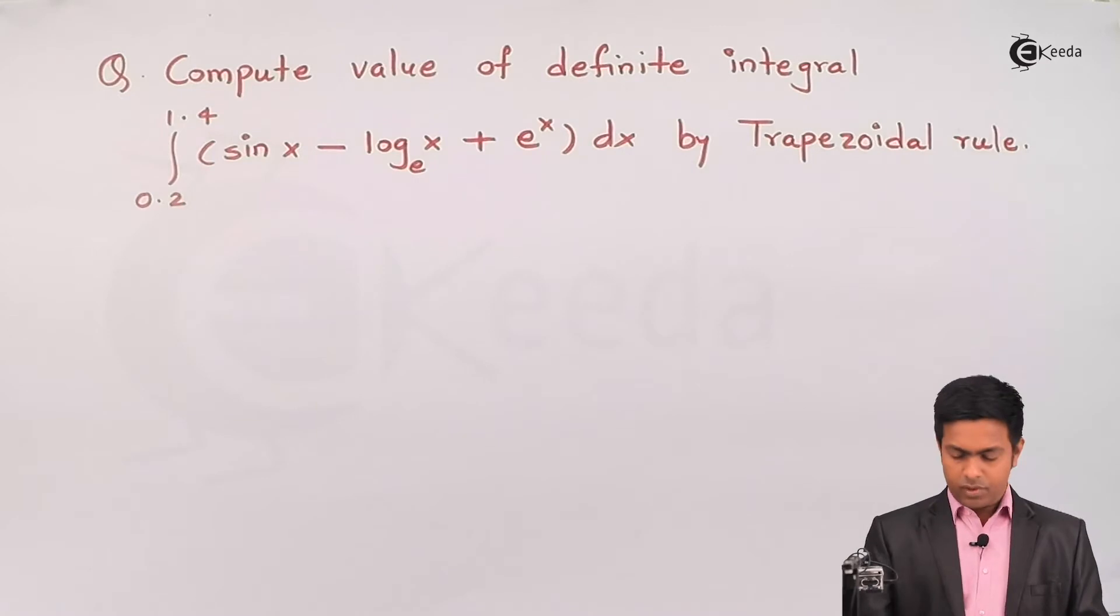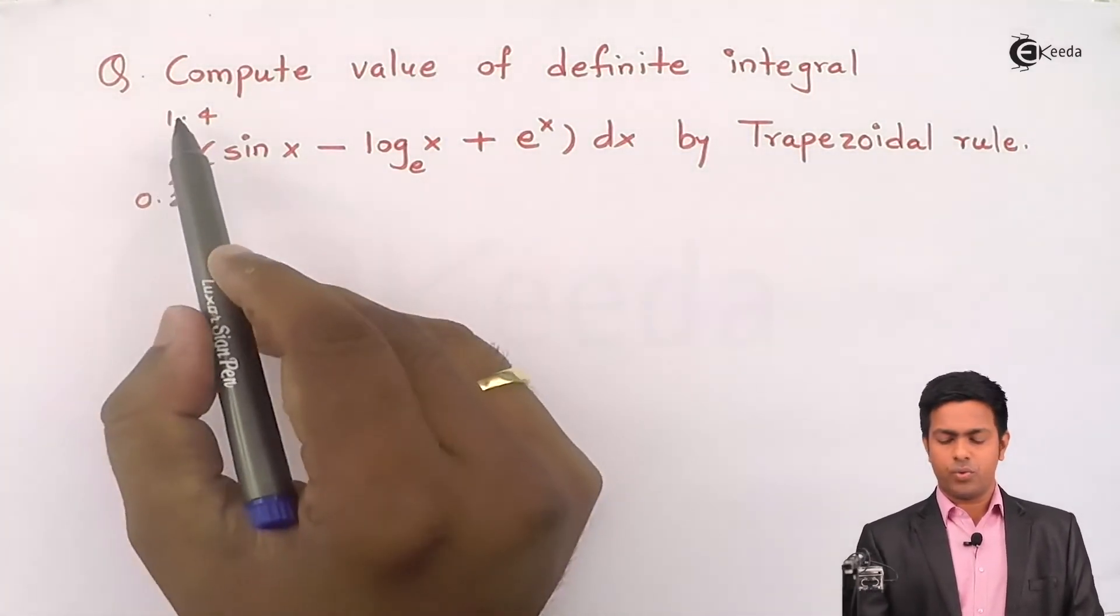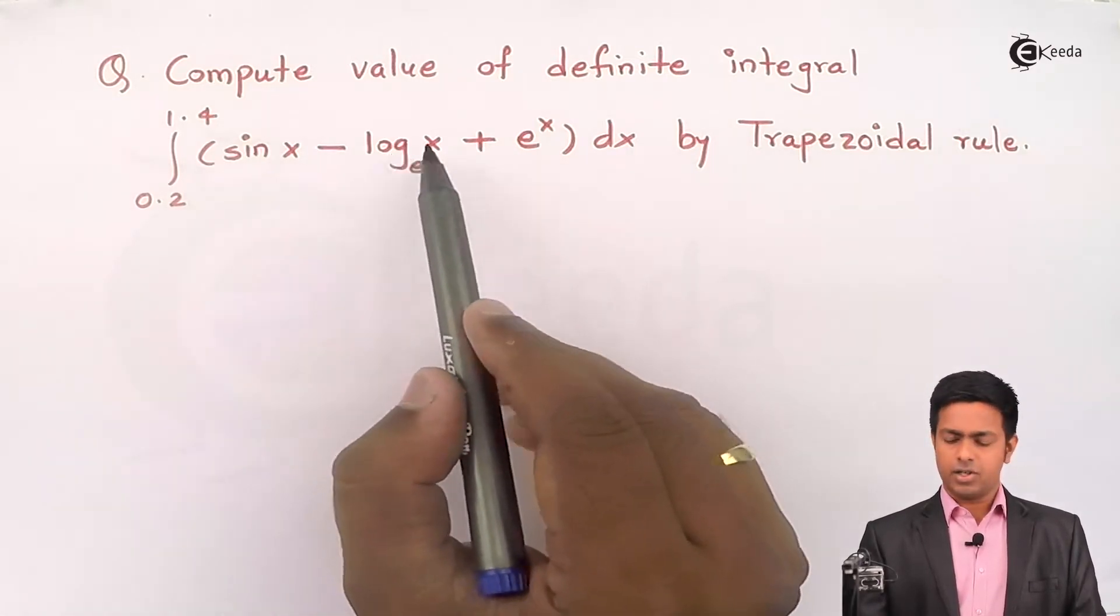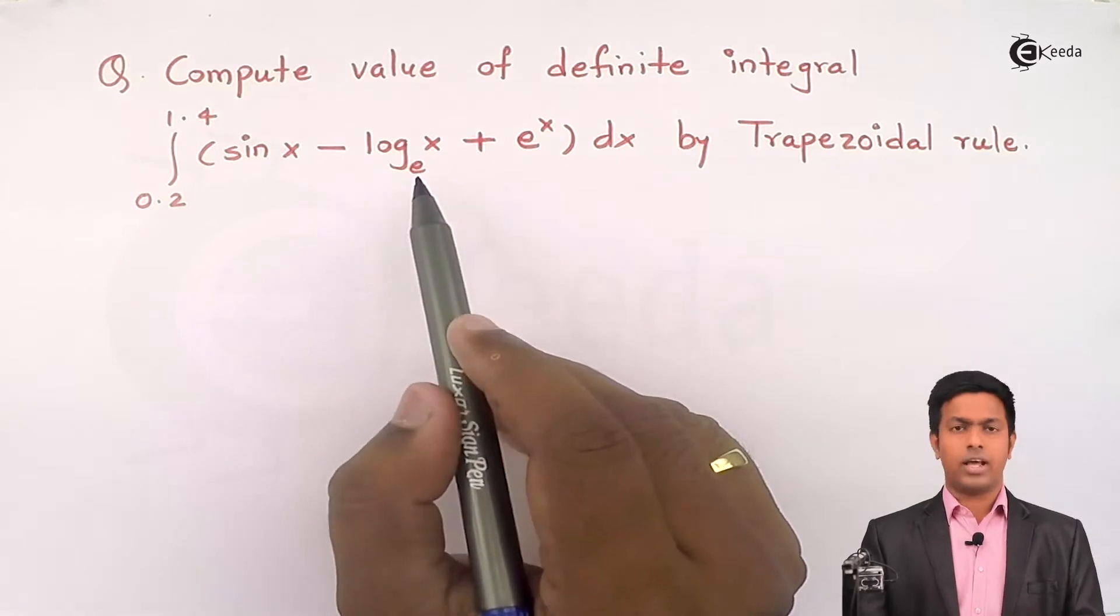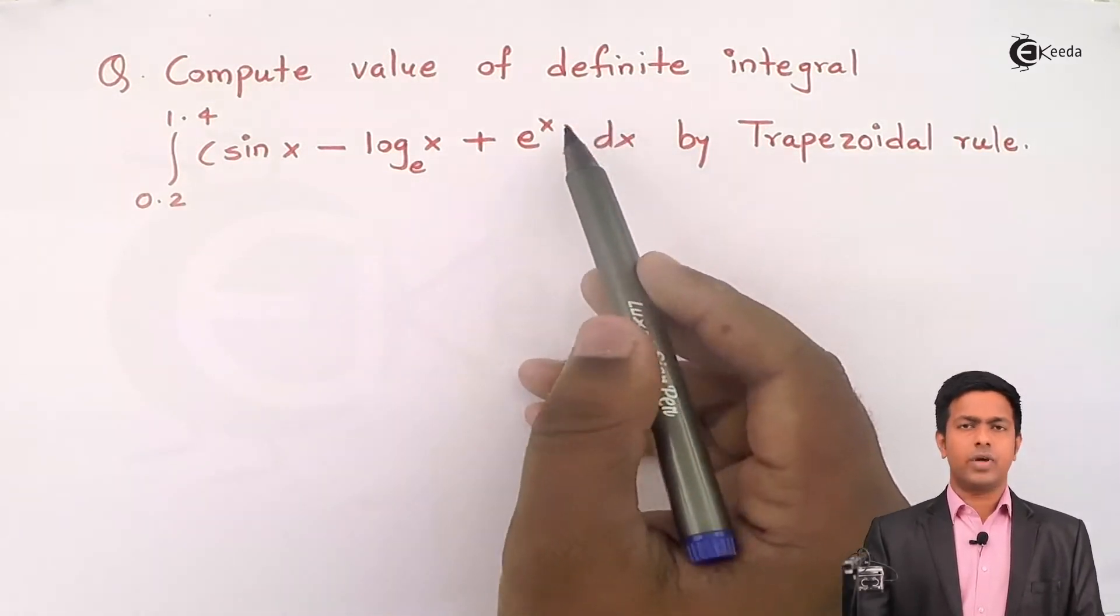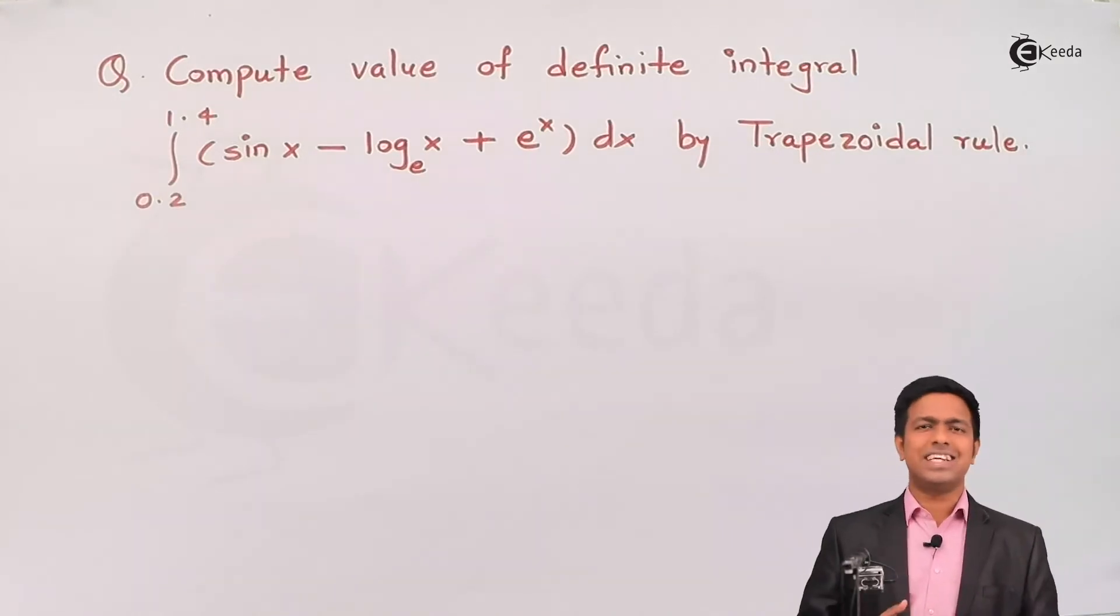So let's start. Here we have integration from 0.2 to 1.4 of sin x minus log x to the base e (that is the natural logarithm) plus e raised to x dx, and we have to evaluate this integration by using trapezoidal rule.